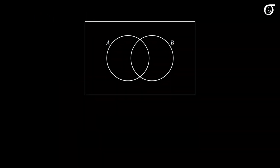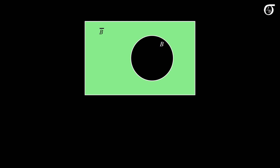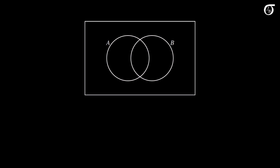Here's a Venn diagram representation of a sample space with events A and B. A is represented by the circle on the left, and B by the circle on the right. Recall that B complement is everything in the sample space that is not in B. Here B complement would be represented by the green region. B and B complement are mutually exclusive events that together make up the entire sample space. If we go back to A and B, the overlap of the circles represents the intersection of A and B.